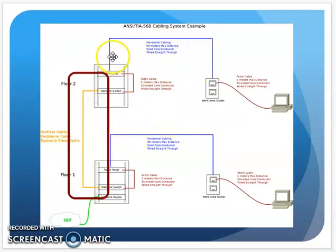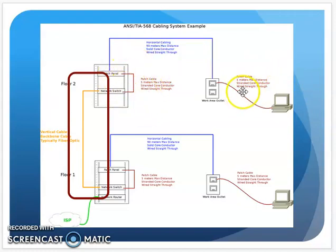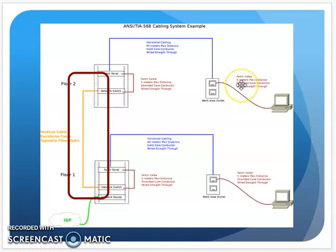To recap: horizontal cabling runs from the patch panel out to the outlets — solid cabling, limited to 90 meters. Patch cables are on each end: one in the closet from the patch panel to the switch, one from the outlet to the user's computer. Those patch cables are stranded for flexibility and are typically a few feet up to about 5 meters. And the backbone connects the closets together, typically fiber optic for bandwidth and sometimes for distance. When we come back in the next section, we'll start talking cable management.